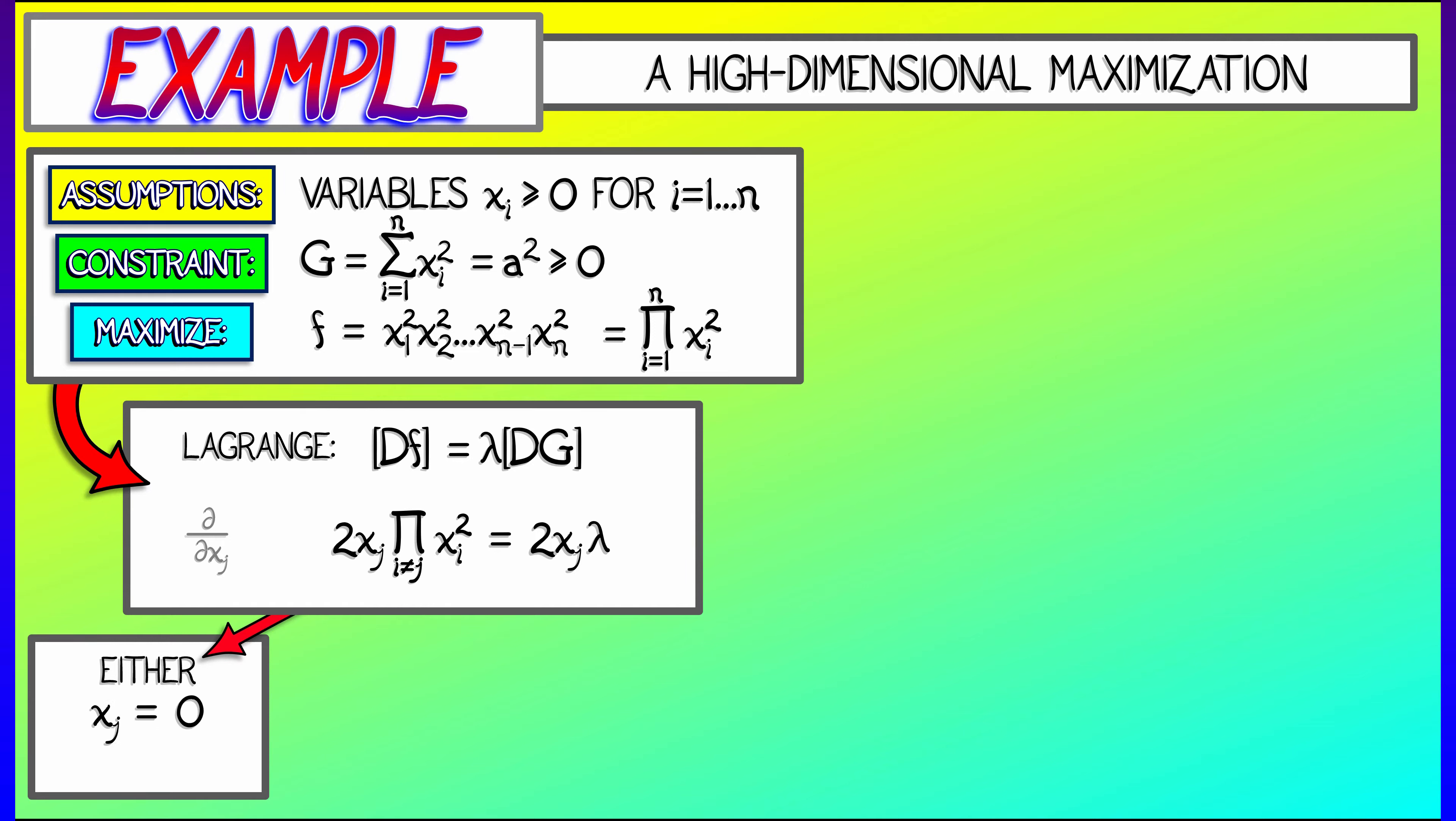Now what this equation means is that either xj equals zero, and that can't be the case. That's not going to be maximal, right? That product is going to be zero. So get rid of that,